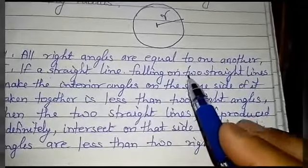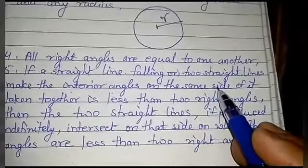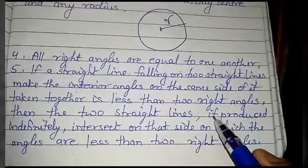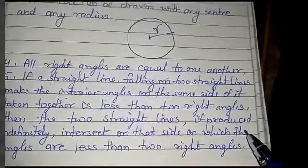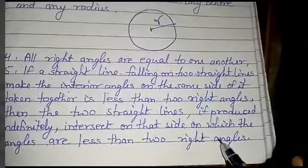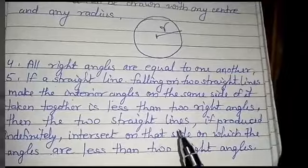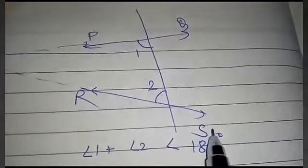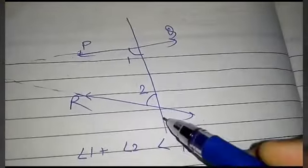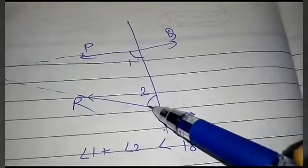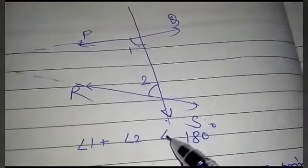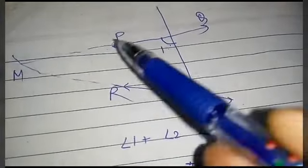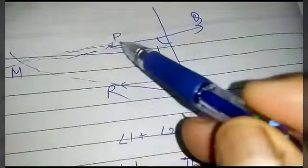Fifth postulate — very important: if a straight line falling on two straight lines makes the interior angles on the same side together less than two right angles, then the two straight lines, if produced infinitely, will intersect on that side. If lines PQ and RS are cut by a transversal and the interior angles 1 and 2 sum to less than 180 degrees, they will meet at a point on that side.